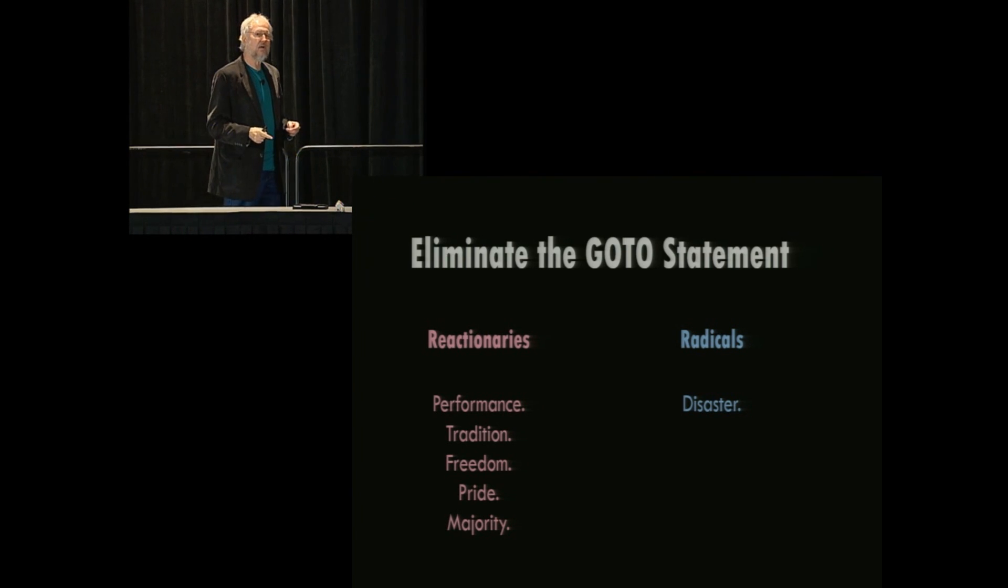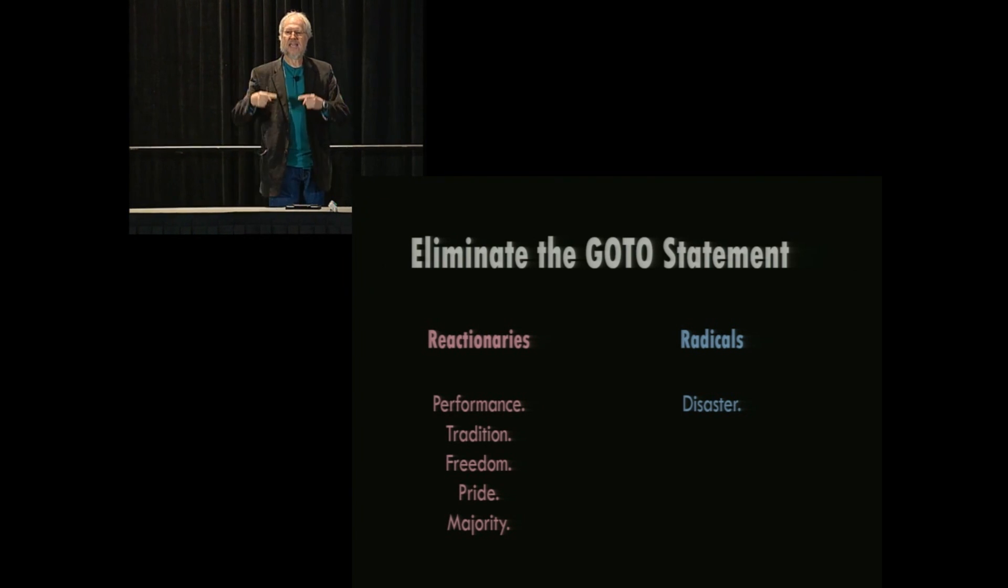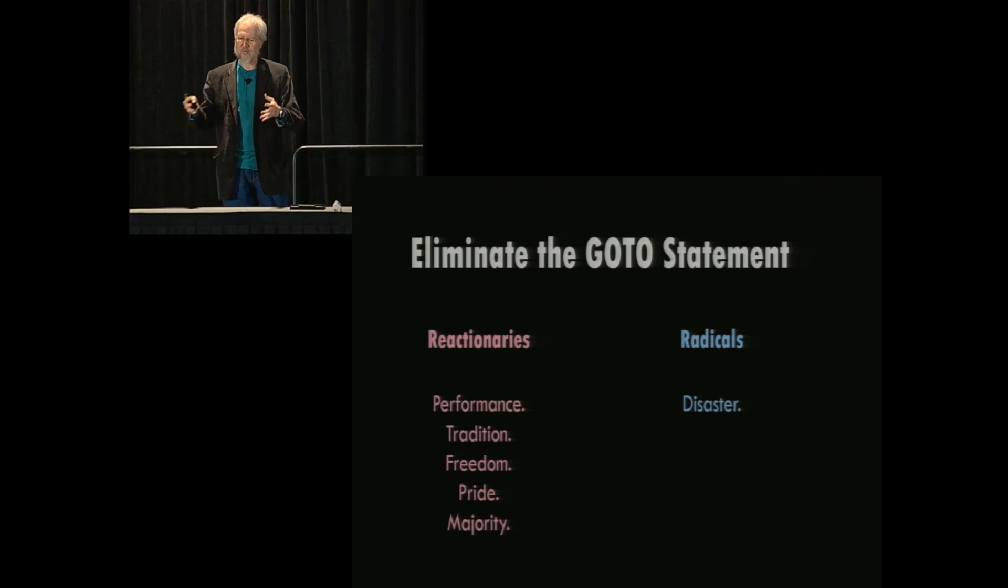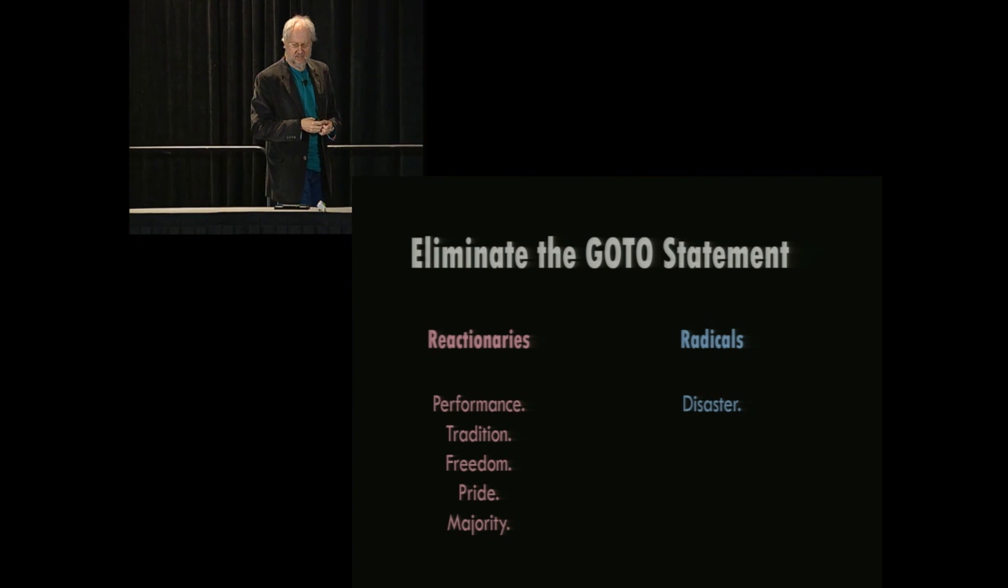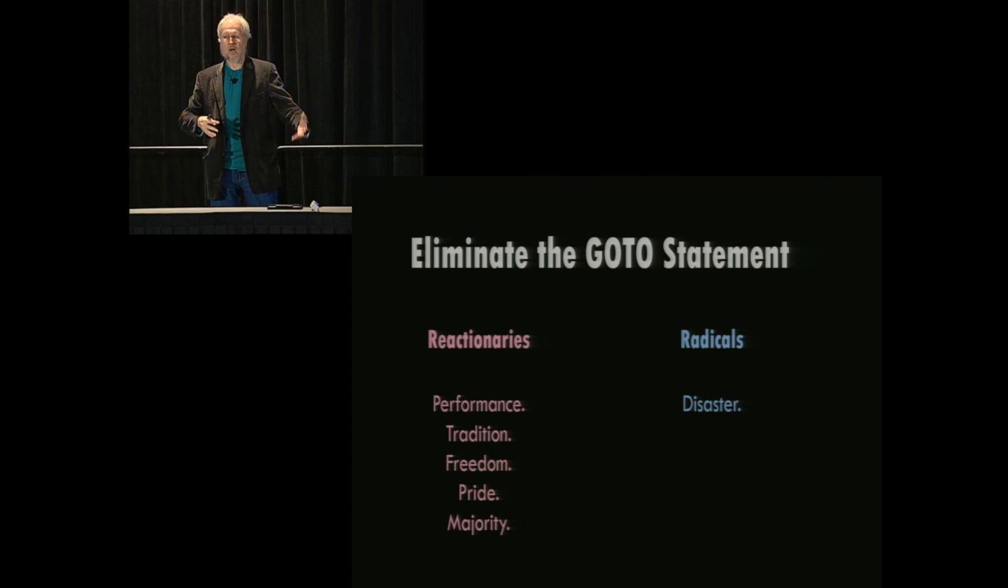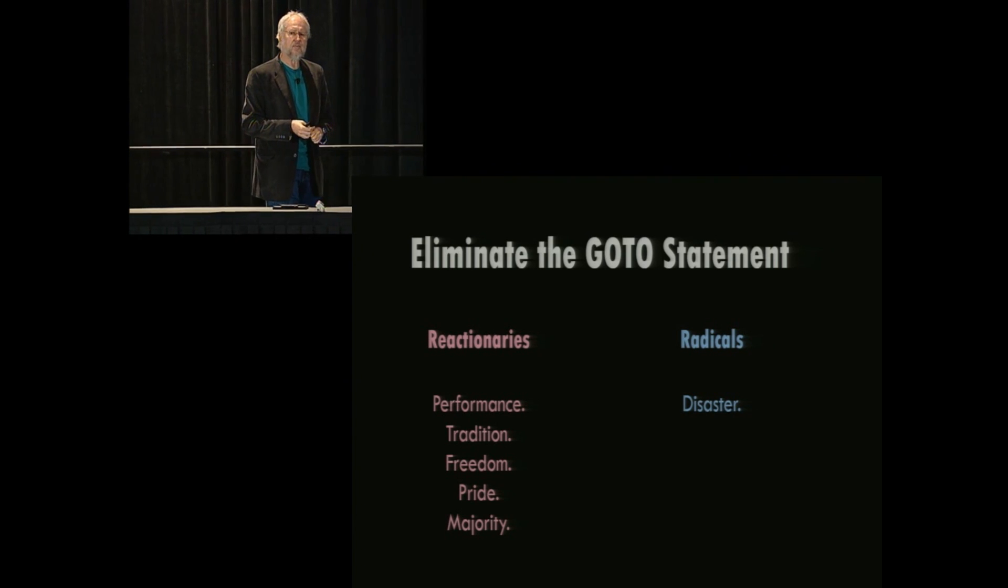There's a performance argument here that there are cases where if you don't have go-to, you need an extra variable and an if, and we just can't afford that. For performance, we need to hold on to the go-to. There is also an argument about tradition. We have always had go-to, and so we should always have go-to.